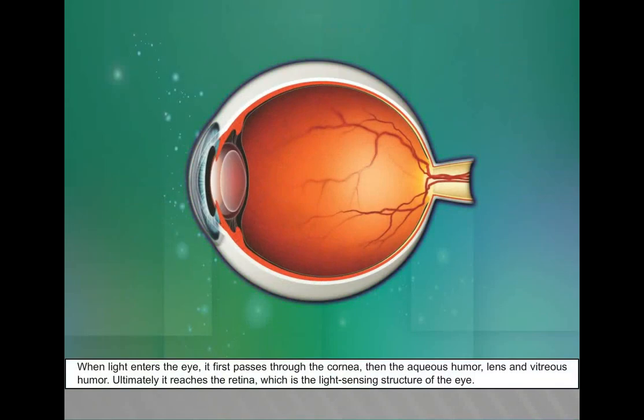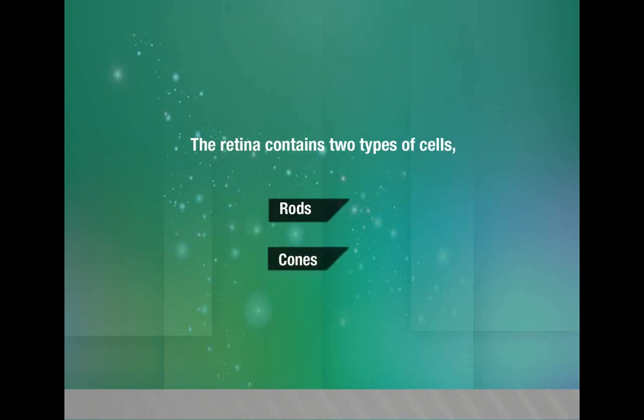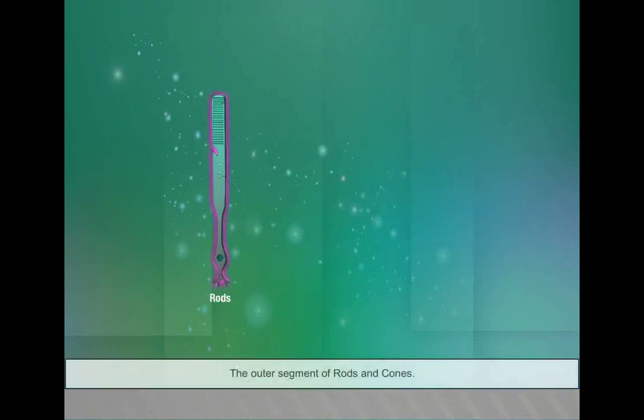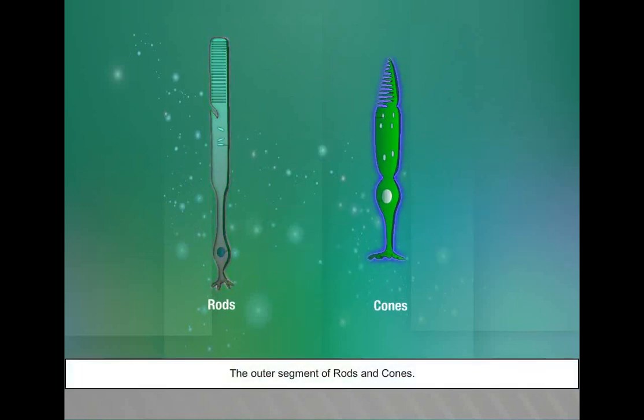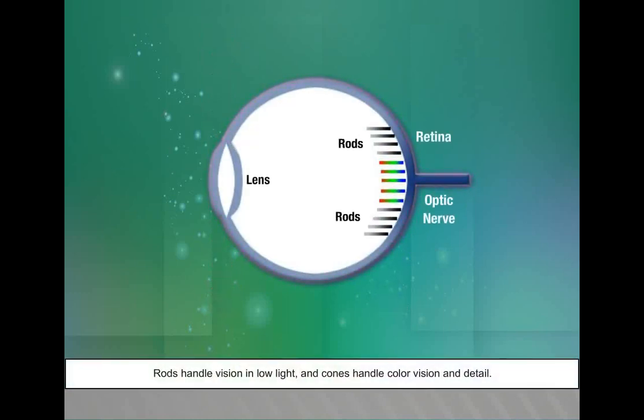When light enters the eye, it first passes through the cornea, then the aqueous humor, lens, and vitreous humor. Ultimately, it reaches the retina, which is the light-sensing structure of the eye. The retina contains two types of cells: rods and cones. The outer segment of rods and cones. Rods handle vision in low light, and cones handle color vision and detail.